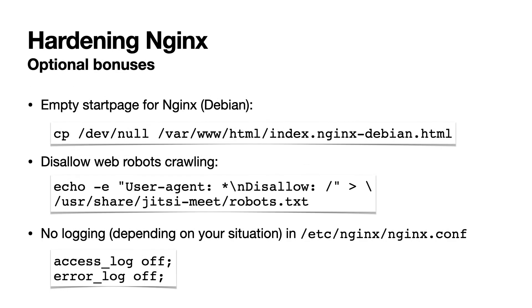The following steps are completely optional and you do not have to do this. You can clear the default home page of nginx, you can disable web robots from crawling the Jitsi website, and depending on what you are trying to achieve with regard to data privacy, you might want to disable the logging of the nginx web server altogether.